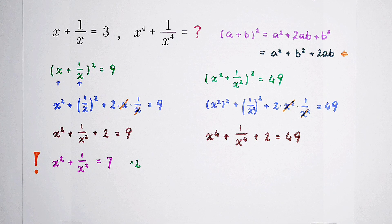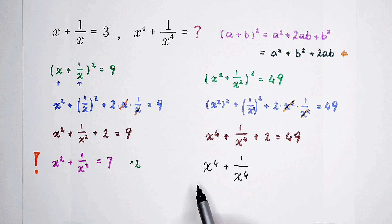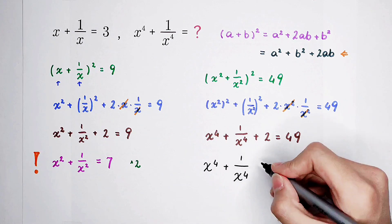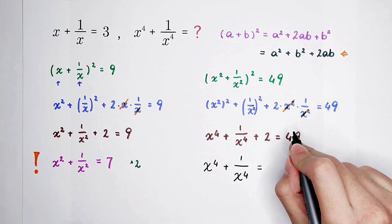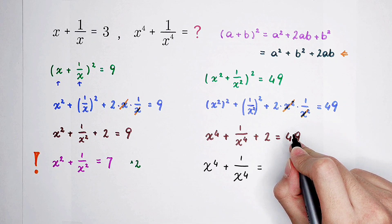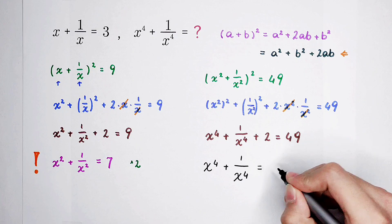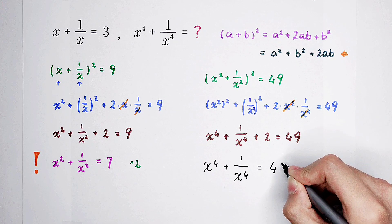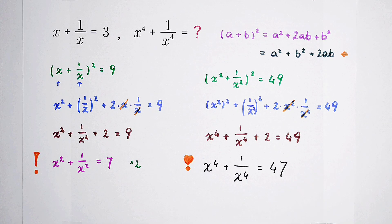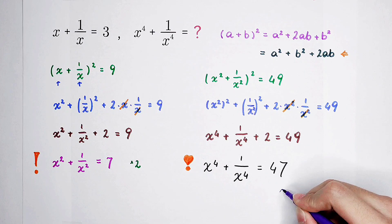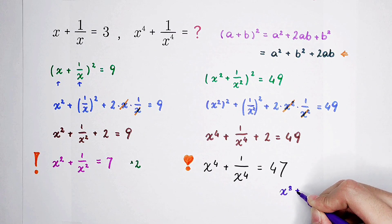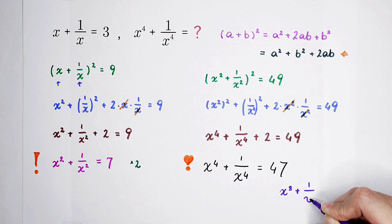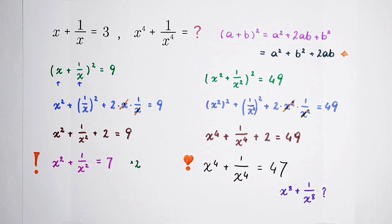And our final answer and the result to our question: x to the power of 4, then plus 1 over x to the power of 4, is 49 minus 2. Don't calculate it wrongly — it is 47. Now, question: are you able to solve for the value of x to the power of 8, then plus 1 over x to the power of 8? See you next time. Bye-bye.